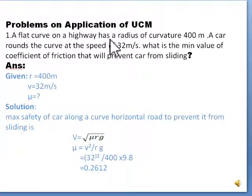A flat curve on a highway has a radius of curvature 400m. A car rounds the curve at the speed of 32 m per second. What is the minimum value of coefficient of friction that will prevent car from sliding?